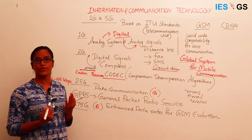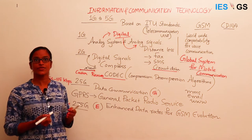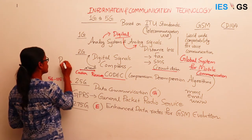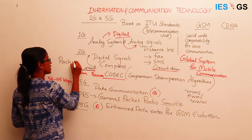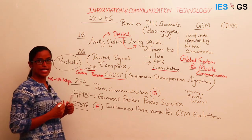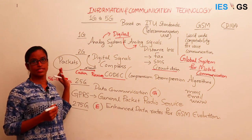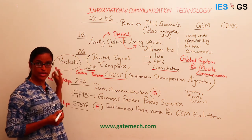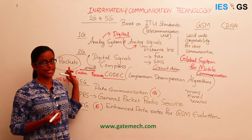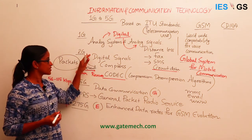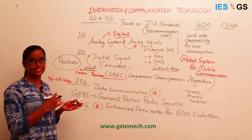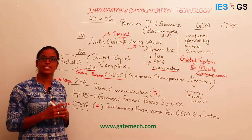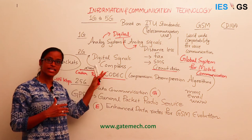However, the internet works in a different way — it transfers data through packets using IP addresses. The second generation was not compatible with this packet data, so there was no compatibility between the internet and mobile communication.